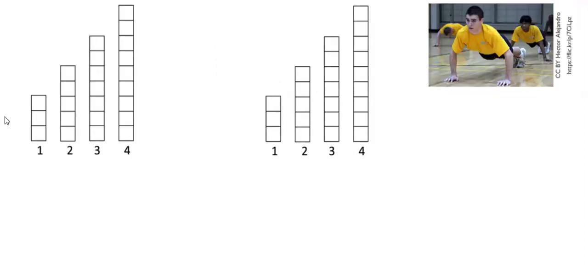In this task, Scott is doing push-ups, and this diagram models how many push-ups he does each day. The diagram is listed twice because the task asks us to create both a recursive equation and an explicit equation, so I'm going to demonstrate how to use the diagram to do both of those. Recursively, I'm looking at how the amount of push-ups Scott's doing every day changes as we go from one day to the other.